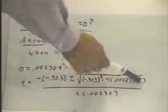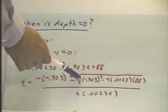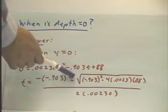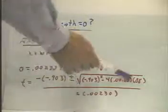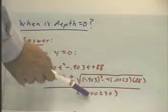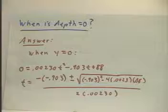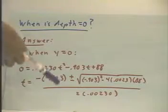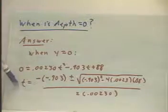If what's under the discriminant is positive, then we're going to have a plus and a minus some number to add to the 0.903 over 0.00460, and then we're going to get two possible values of t.